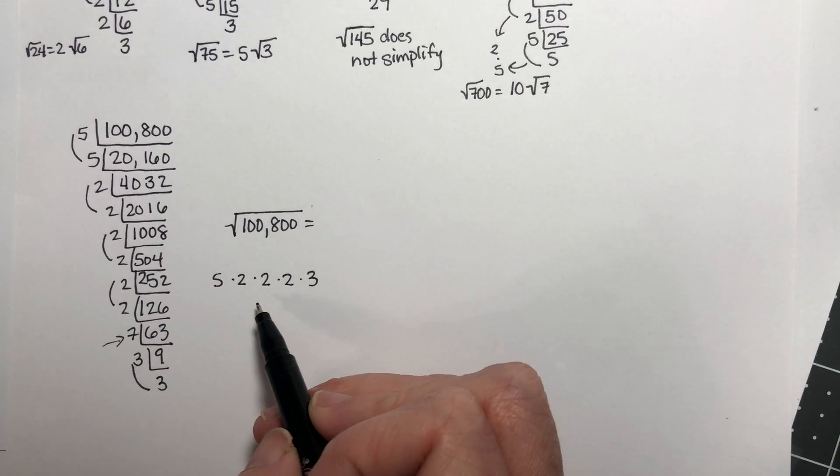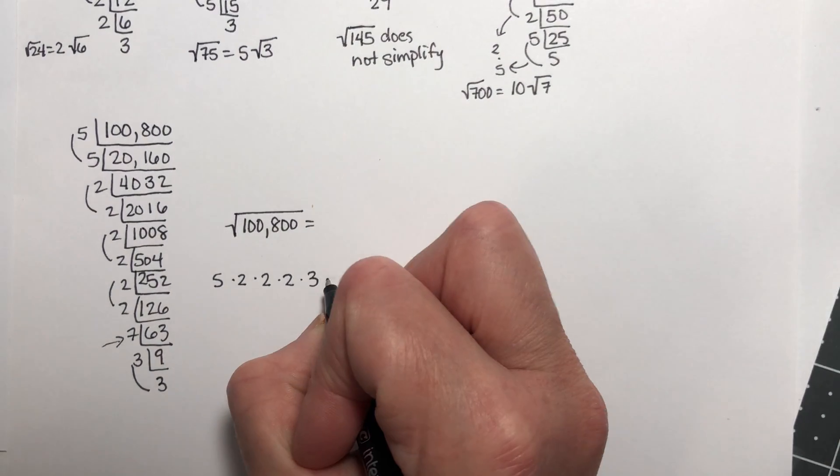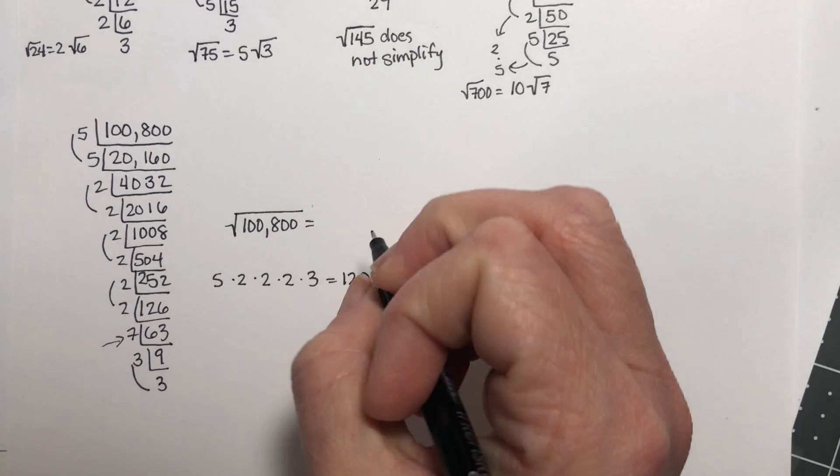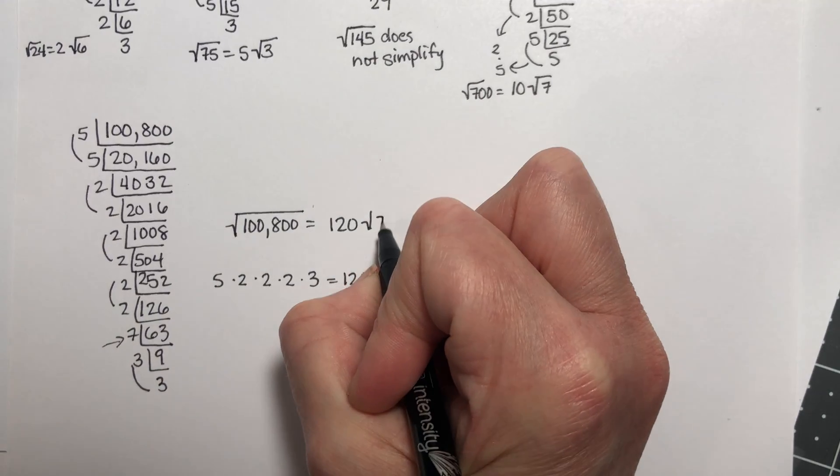5 times 2 times 2 times 2 times 3 is 120. So this is 120 times the square root of 7.